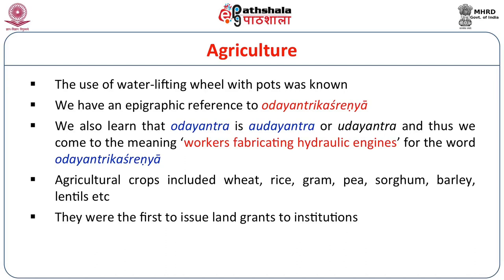Agricultural crops included wheat, rice, gram, pea, sorghum, barley, lentils, and others. The Satavahanas were also the first to issue land grants to institutions.